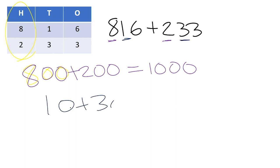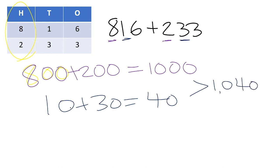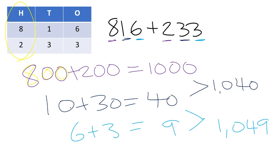10 plus 30 is 40, so I'd hold 1,040. Then the last thing is to add the digits in the ones place: 6 plus 3 equals 9. Adding 9 to 1,040 gives me 1,049. As you work through the packet adding numbers in the hundreds, really challenge yourself not to write anything down — pay attention to place value and solve those problems using mental math.